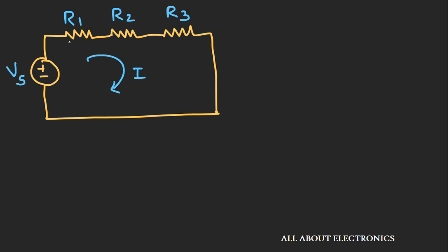And because of the flow of this current, there will be a voltage drop across these resistors. Let's say the drops are V1, V2, and V3. So now here we can apply Kirchhoff's voltage law.